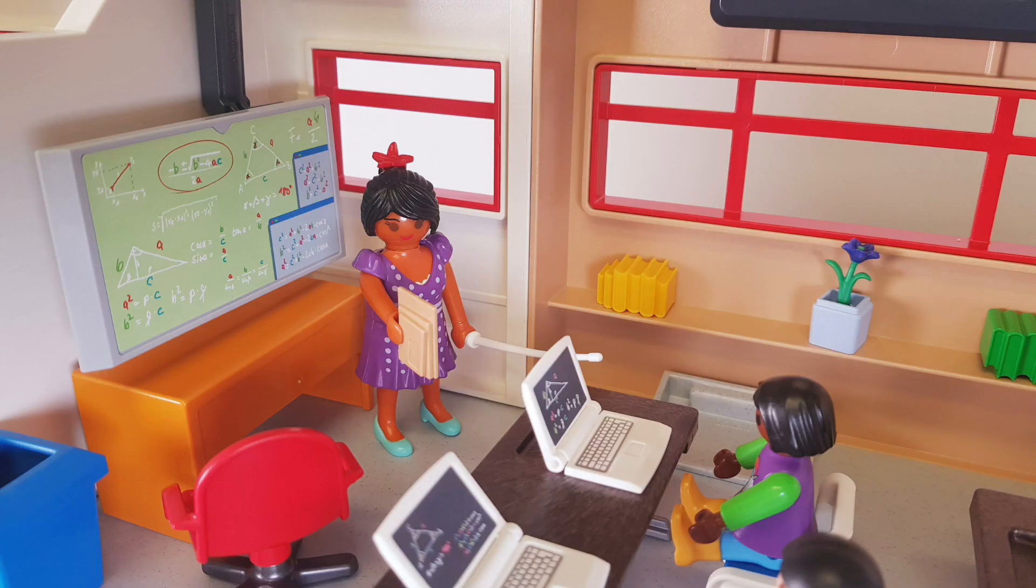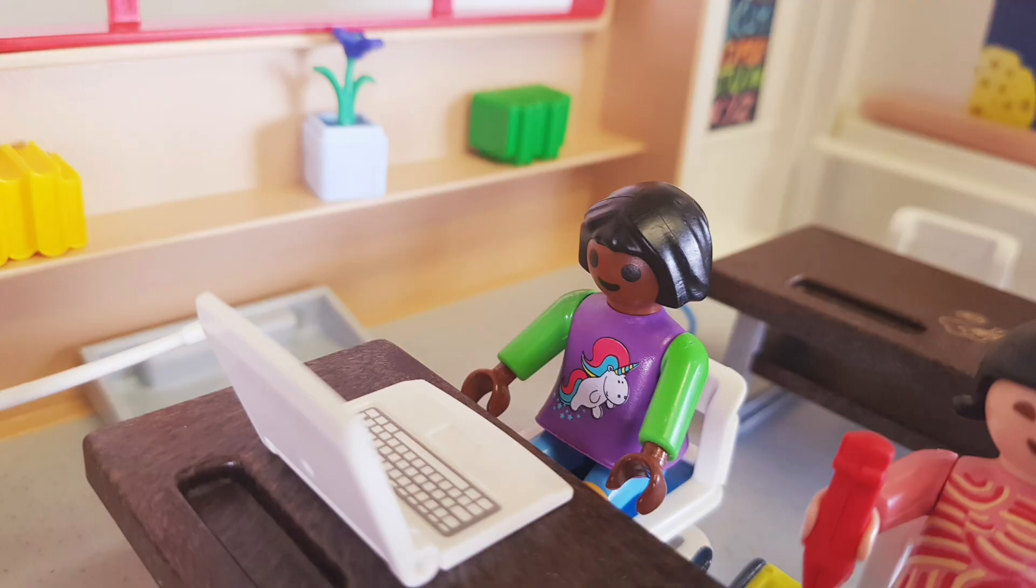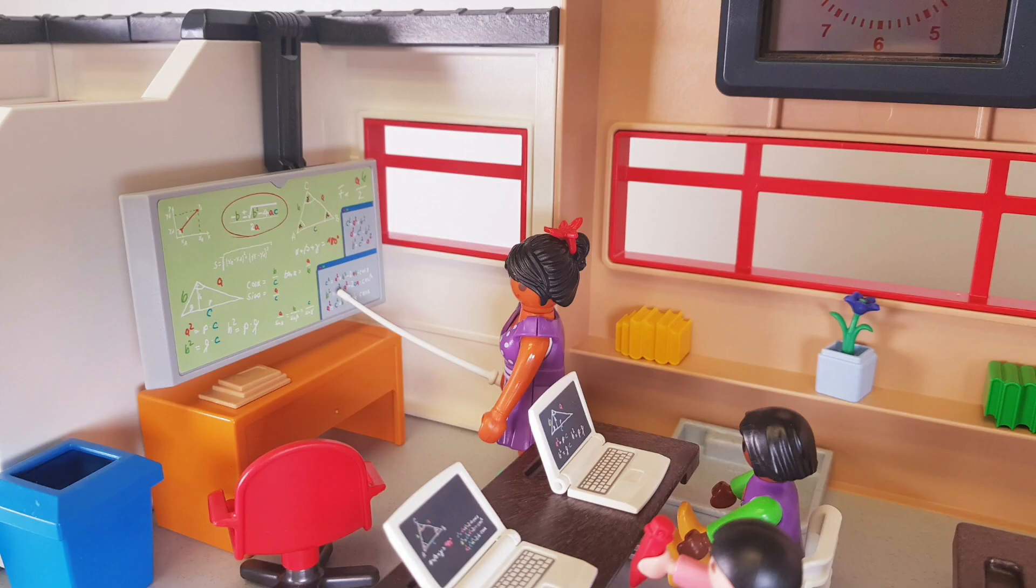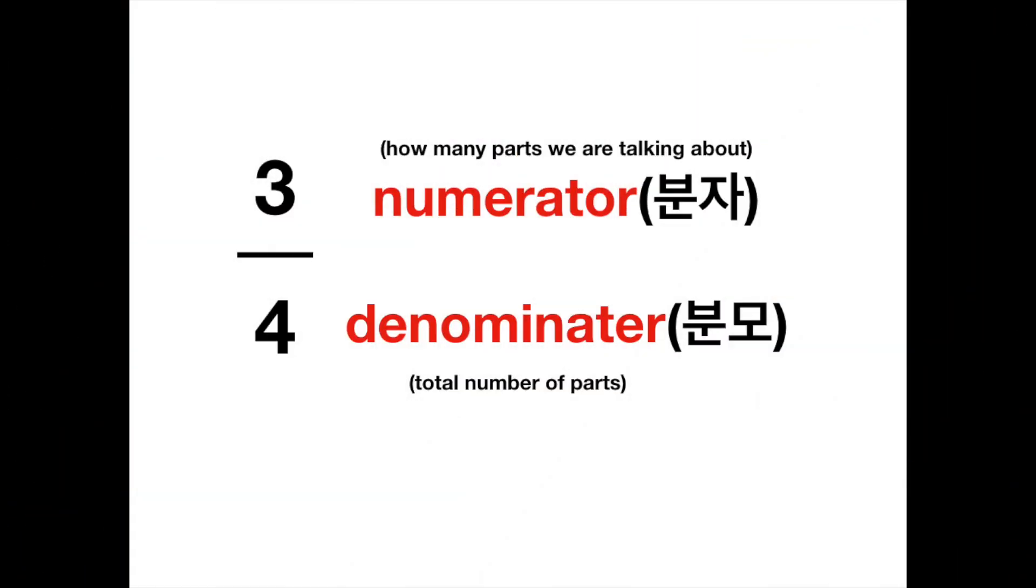What's a fraction usually made of them? A numerator and a denominator. But teacher, what are these? Okay, now look at the whiteboard, please! A fraction has two parts. The top number is called a numerator and it's 분자 in Korean. It tells how many parts we're talking about and the bottom number is called a denominator. And it's 분모 in Korean. It tells the total number of parts.